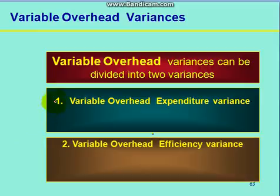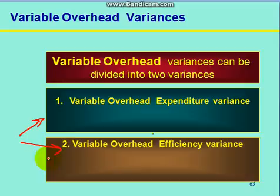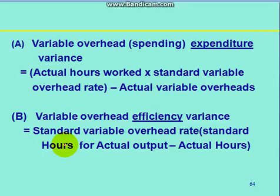Second, variable overhead variance can be divided into two categories: variable overhead expenditure variance and variable overhead efficiency variance.